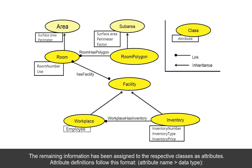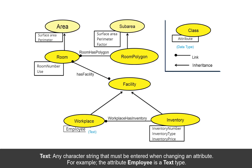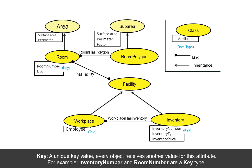Attribute definitions follow this format: attribute name, data type. Text: any character string that must be entered when changing an attribute. For example, the attribute employee is a text type. Key: a unique key value — every object receives another value for this attribute. For example, inventory number and room number are a key type.